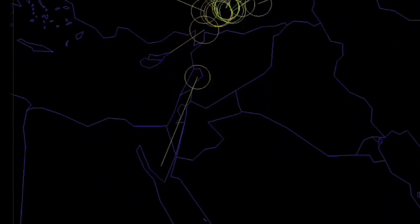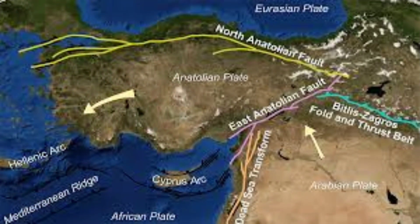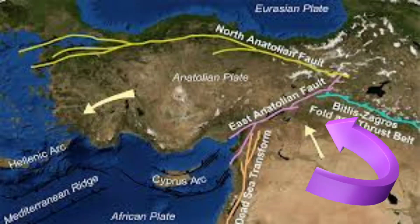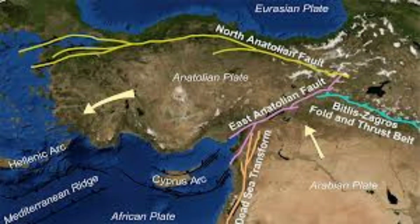This epicenter is located at a fault plane zone. Turkey has experienced six consecutive earthquakes in recent times because Turkey is located in a fault plane zone. A fault plane zone is the site of the epicenter. Faults are discontinuities in crustal rocks and are responsible for major earthquakes.